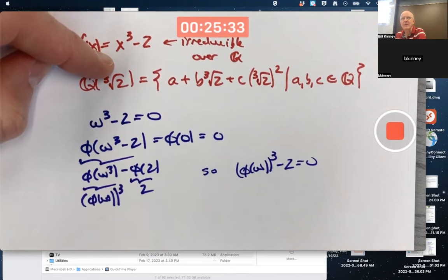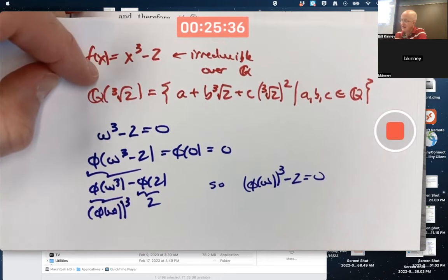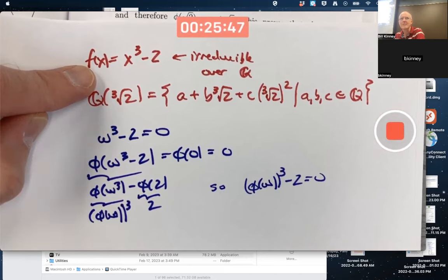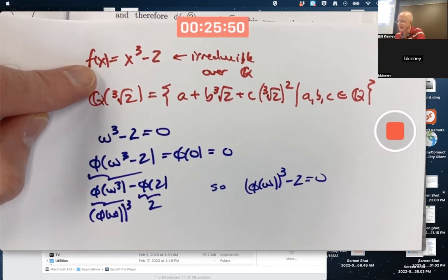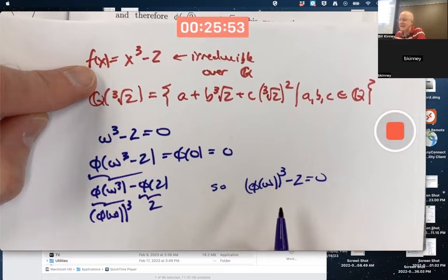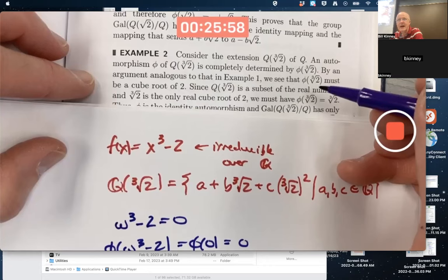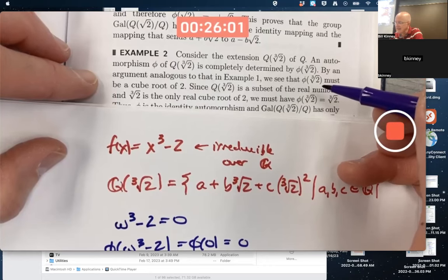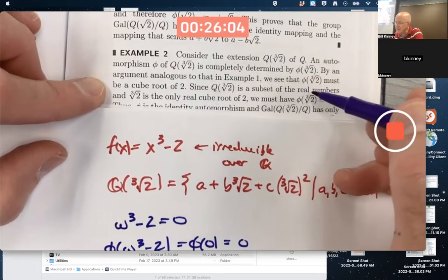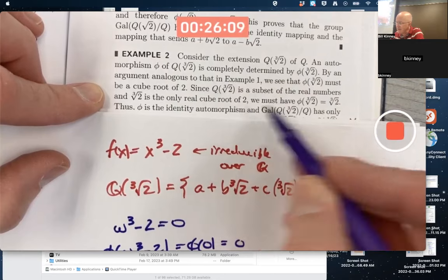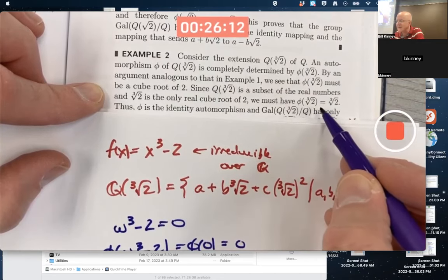However, it's a little funny in this one compared to the other example in that the other roots of this equation, this polynomial, are actually complex numbers that are not real. They're actually complex numbers, so if phi is an element of the Galois group here, this has got to be a cube root of 2. It's a subset of the real numbers. The cube root of 2 is the only real cube root of 2. So phi actually has to map the cube root of 2 to itself.